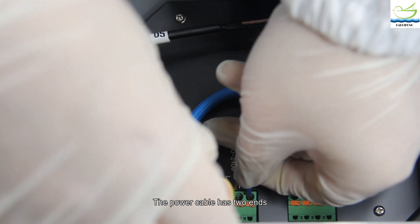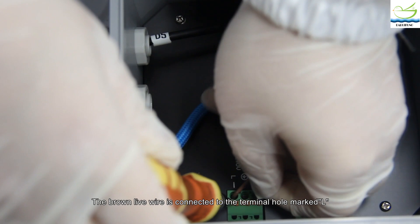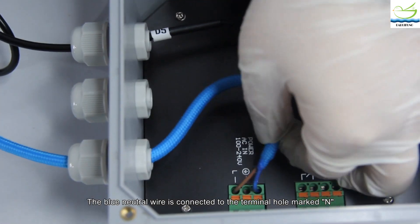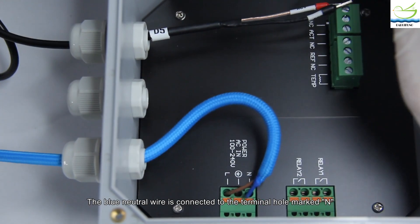The power cable has two ends. The brown live wire is connected to the terminal hole marked L. The blue neutral wire is connected to the terminal hole marked N.